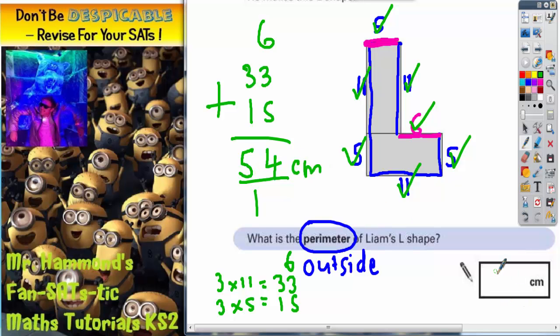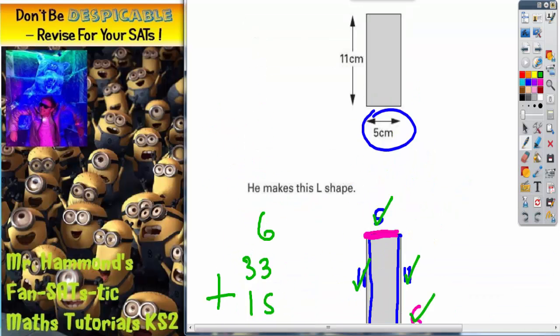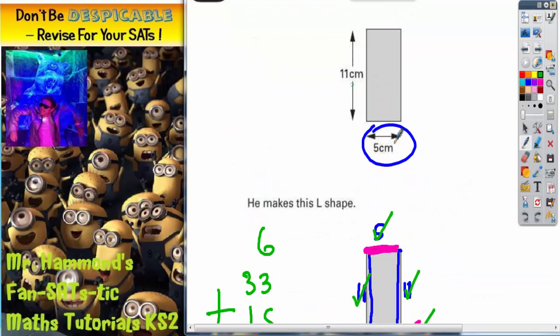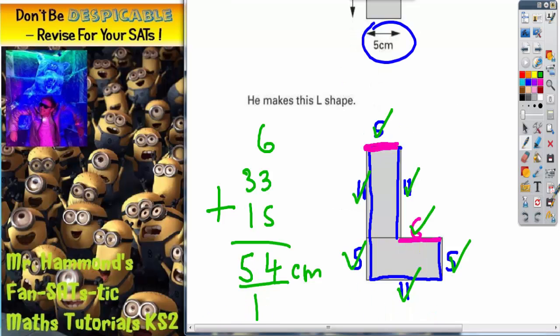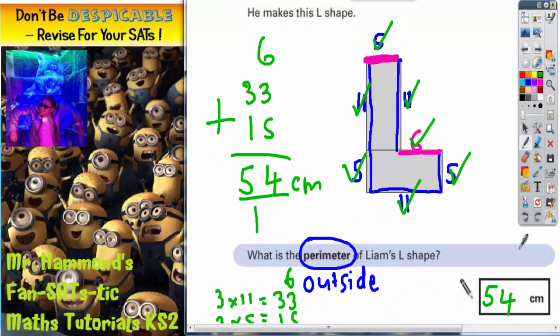They've already put the cm in for us so all we need to do is write in 54. And there's your answer. The best advice I can give you for that one is to make sure that before you start doing anything you write the lengths and the widths on the appropriate places on the diagram. Final answer 54 cm around the outside of the shape.